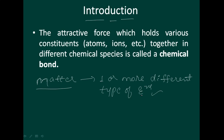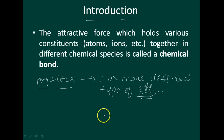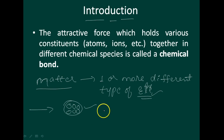Under normal conditions, no element exists as an independent atom in nature — except noble gases. However, a group of atoms is found to exist together as one species having characteristic properties. There are some number of atoms in this element and they exhibit some characteristic properties. Such a group of atoms is called a molecule.